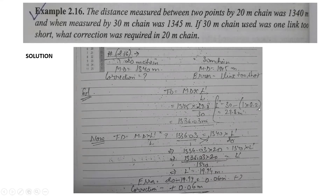For one link conversion, one link is equal to 0.2 meters. That's why I multiplied by 0.2 so that it will come to meters. Since the incorrect length was 30 meters and we minus the short error, 30 meters minus 0.2 gives us 29.8 meters as the incorrect length of the chain.